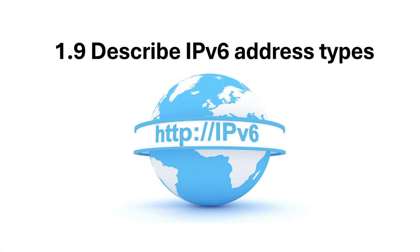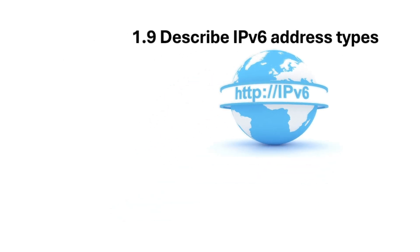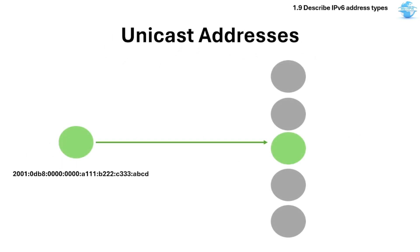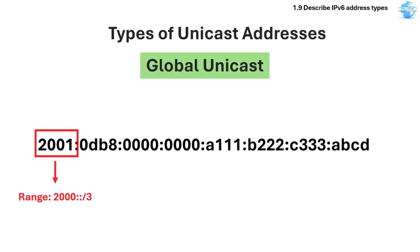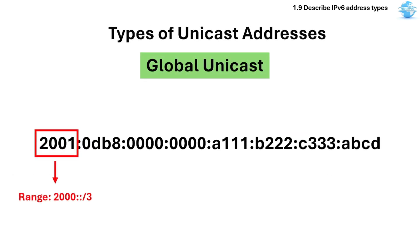Section 1.9 describes IPv6 address types. IPv6 is a more complex and versatile system for addressing compared to its predecessor, IPv4. It categorizes addresses into several types, each serving a distinct purpose in network communication. Let's start with Unicast. A Unicast address identifies a single unique interface in an IPv6-enabled device. Packets sent to a Unicast address are delivered to one specific host. There are also different types of Unicast address. One is the Global Unicast, and the range starts with 2 or 3, like 2000/3.